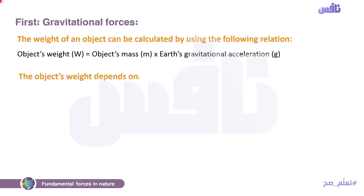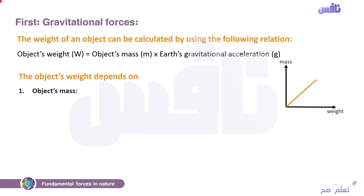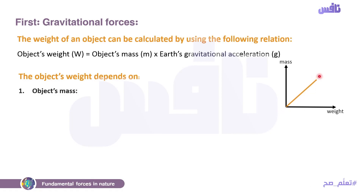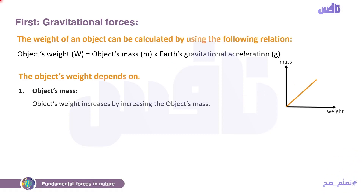The object's weight depends on: number one — object's mass. By increasing the mass the weight increases. يبقى الrelation هنا ايه؟ اتفقنا إن الtwo physical quantities بيكونوا مع بعض — ده increase ده increase. يبقى هنا بسمي الrelation دي direct proportional. Represented by a straight line passing from origin point. هنا الماس وهنا الويت وديه direct proportional straight line.